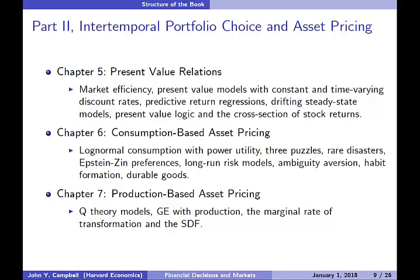Chapter seven is a relatively short chapter on the literature on production-based asset pricing, which asks how one can use the first-order conditions of firms that supply capital to tell us something about discount rates. I begin with the classic literature on Q theory, review general equilibrium models with production, and finally talk about whether firms' investment decisions can be used to reveal the marginal rate of transformation across states and hence tell us something about the stochastic discount factor.